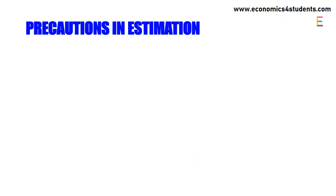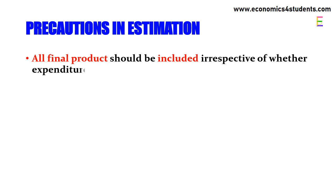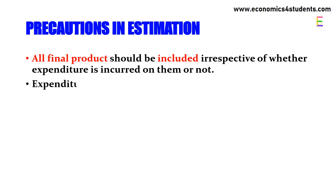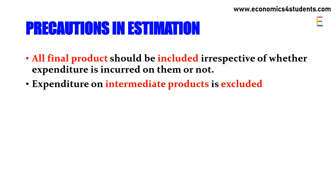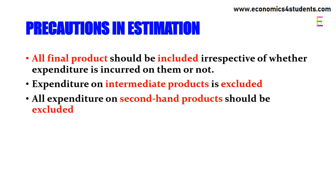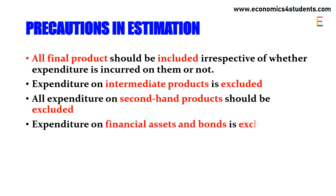Precautions: All final goods and services are to be included irrespective of whether expenditure is incurred on them or not. Expenditure on intermediate products is excluded to avoid double counting. All expenditure on second-hand products should be excluded, as expenditure on second-hand goods reflects only the transfer of ownership. Expenditure on financial assets and bonds is also excluded, as it reflects only the transfer in ownership of these assets.